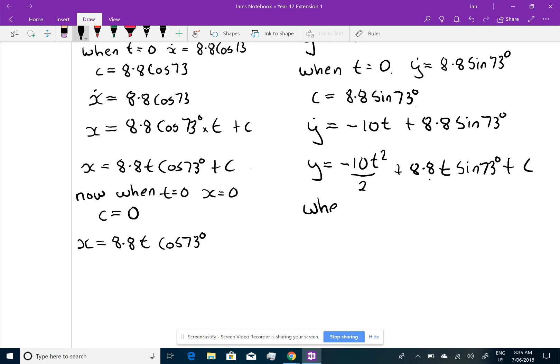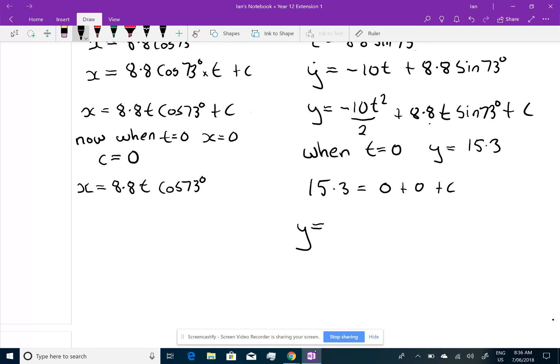But here is the big kicker. When t equals 0, y is 15.3. Oh, so that means 15.3 equals 0, because 10 times 0 squared, 0 plus c. So, my constant is 15.3. So, my equation for displacement, minus 10 on 2, well, that's negative 5t squared, plus 8.8 t sin 73, plus 15.3.